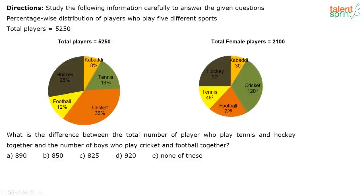What is the difference between the total number of players who play tennis and hockey together and the number of boys who play cricket and football together? In this question, it is easy to find the total number of players who play tennis and hockey. The total is 28 percent plus 16 percent, that is 44 percent. So you have 5250 into 44 by 100.